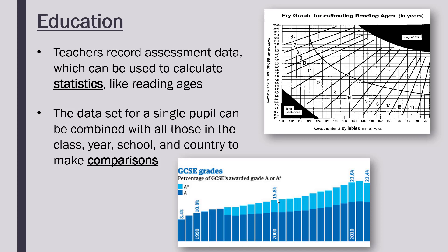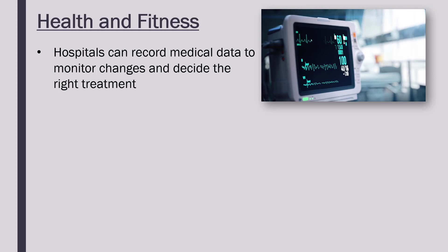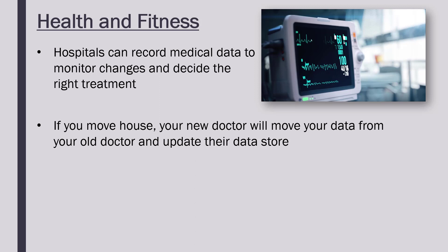The health and fitness industry includes hospitals, doctors, gyms, and general products people use to work out and play sports. Hospitals can record lots of medical data — doctors can record your heart rate and various other metrics, and from this data they can analyse it and decide on the right treatment, and monitor changes to see if you're getting better. Hopefully you are registered with your local GP, who will have lots of data about you — your medical history and personal information. If you move house, your data should be moved from your old doctor to your new doctor, so two different small data stores will interact and merge.